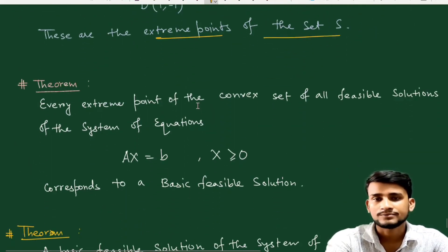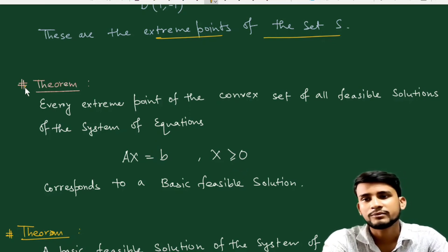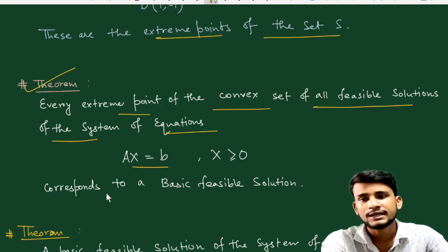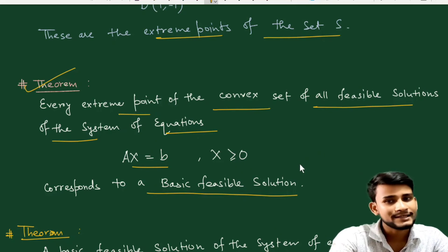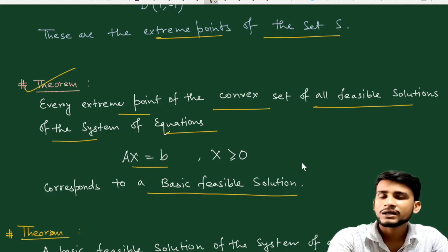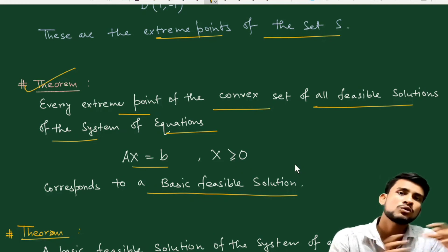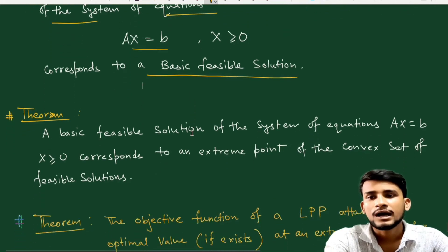Now let's come to some theorems involving convex sets and extreme points. Theorem 1: Every extreme point of the convex set of all feasible solutions of the system of equations Ax = b corresponds to a basic feasible solution.